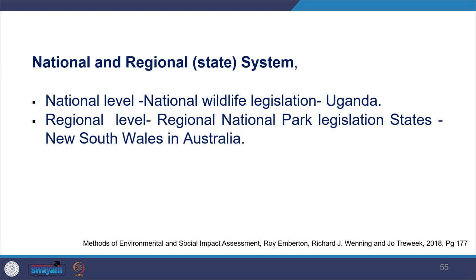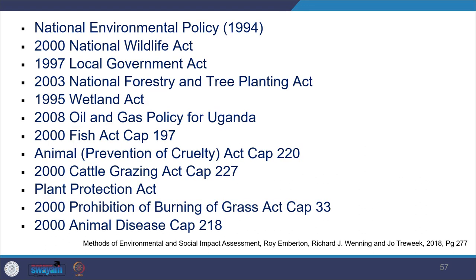Wildlife legislation can occur at both national and regional levels. For example, at national level there is Uganda's national wildlife legislation, and at regional level there is Australia's national park legislation for the state of New South Wales. A range of acts exist across different countries and levels, including national environmental policy, national wildlife act, local government act, wetland act, oil and gas policy, and others.